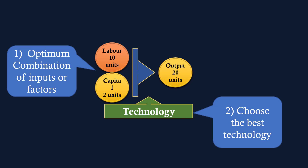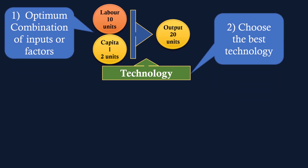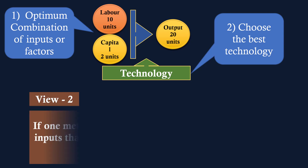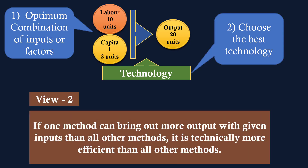We shall see how a producer accomplishes these two tasks. While arriving at the optimum combination, he chooses the best technology by following one rule: if one method uses the minimum quantity of at least one input and no more from other inputs when compared with other methods, it is technically more efficient than all other methods. The same rule can be viewed another way: if one method can bring out more output with given inputs than all other methods, it is technically more efficient.